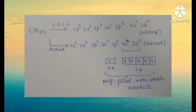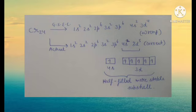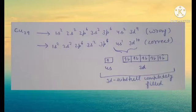The actual configuration for Chromium is 1s2, 2s2, 2p6, 3s2, 3p6, 4s1, 3d5. The orbital structure shows that the 4s orbital has 1 electron and the 3d subshell has 5 electrons — both are half-filled, making them more stable subshells.